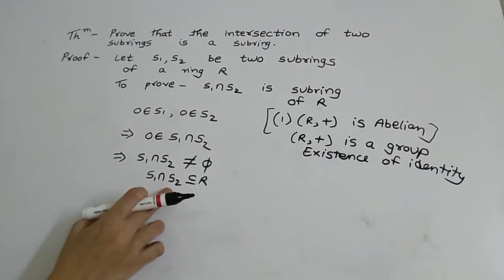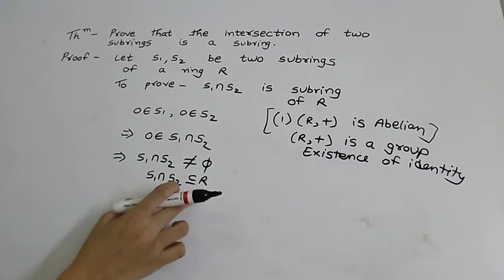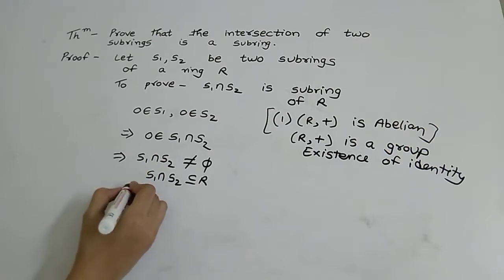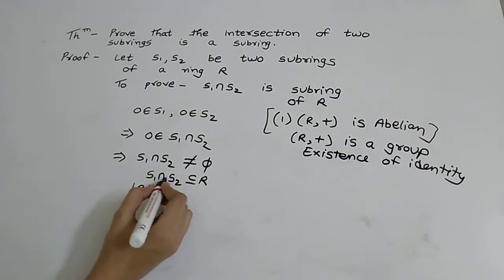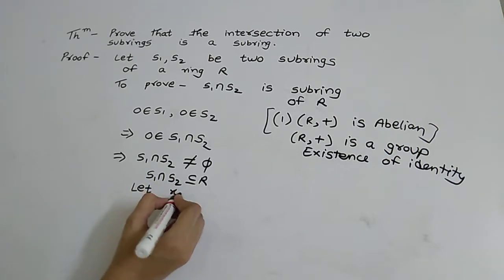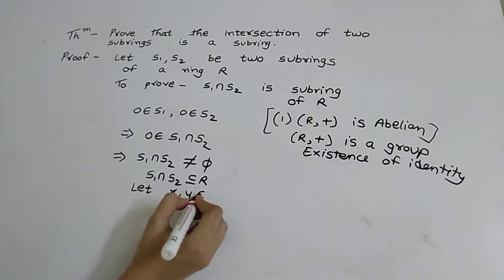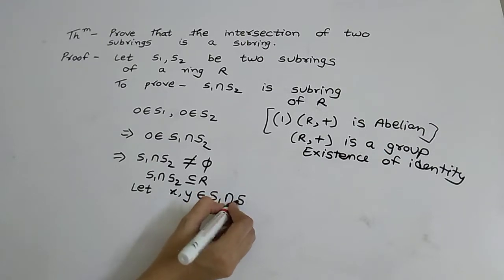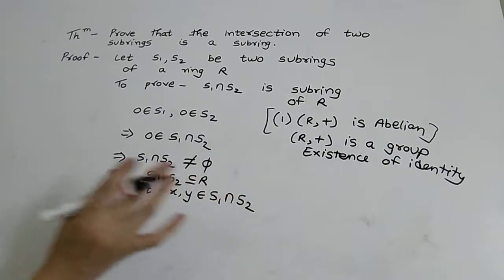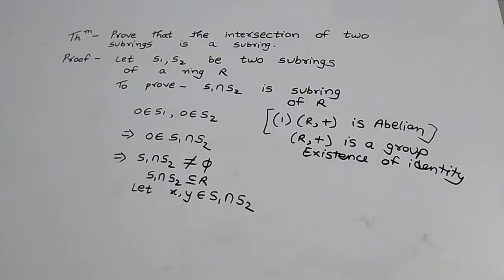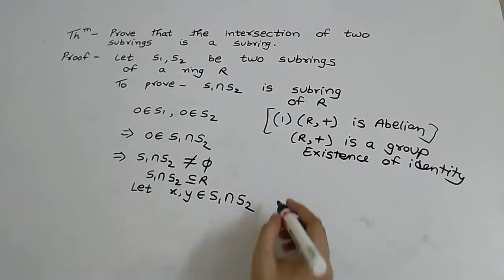Therefore the intersection will also be a subset of R. Now we will take two elements from S1 intersection S2: let x, y belong to S1 intersection S2. We have seen a theorem in a previous video.